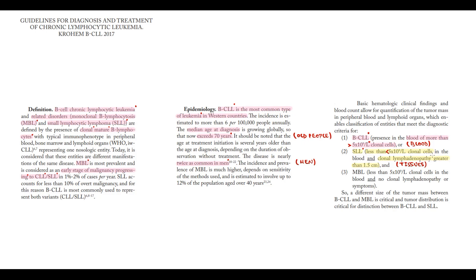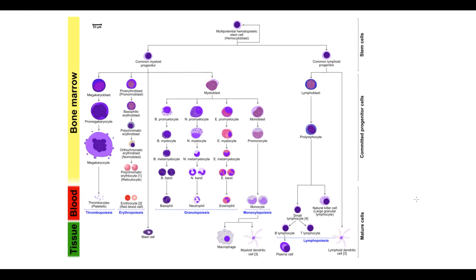To explain how CLL develops, we have to recall hematopoiesis. To make a mature lymphocyte, a stem cell has to undergo differentiation to a common lymphoid progenitor cell, then to a lymphoblast. Lymphoblasts mature into a pro-B lymphocyte, and the pro-B lymphocyte will mature into a mature B lymphocyte.